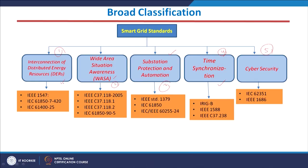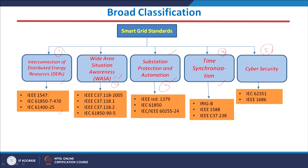While connecting DERs to existing transmission, distribution, or generation networks, we must follow the standards. The IEEE 1547 series is used for interconnection of distributed energy resources. This is a series of standards including 1547.1, 1547.2, 1547.3, 1547.4, and so on. These standards provide criteria and requirements for interconnecting distributed energy resources into the power grid, and were published in 2003.